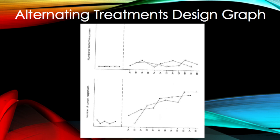The bottom graph shows that the interventions demonstrate control over the dependent variable, but they overlap and increase in a very similar way, meaning that neither intervention has a significantly stronger effect on the target behavior.